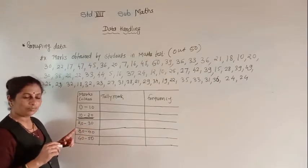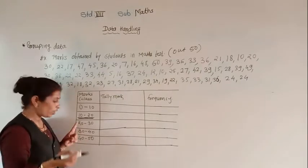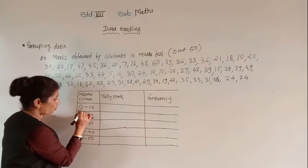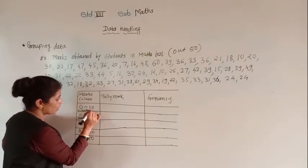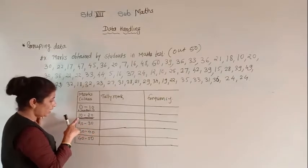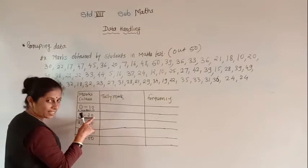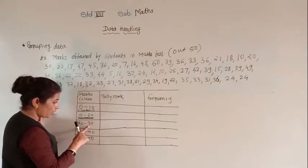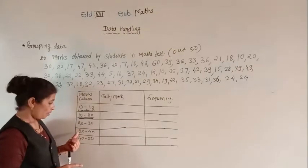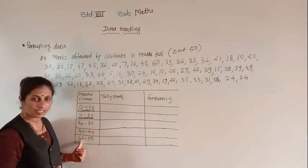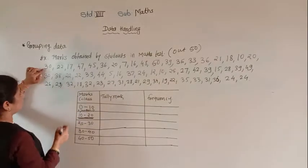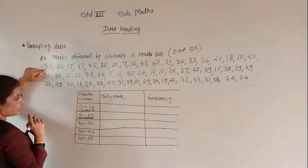For class 20 to 30, students who got 20 marks or more but less than 30 will be counted. For class 30 to 40, students who got 30 or more but less than 40. So the boundaries are: greater than or equal to 0 but less than 10; greater than or equal to 10 but less than 20; greater than or equal to 20 but less than 30; and greater than or equal to 30 but less than 40.